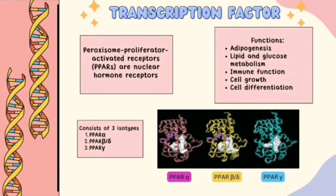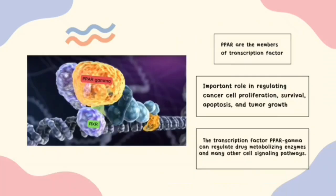Now let's move on to the transcription factors. Peroxisome proliferator activated receptors, PPARs, are the nuclear hormone receptors. The PPAR consists of three isotypes: PPAR-alpha, PPAR-beta or delta, and PPAR-gamma. But in today's discussion, we are going to focus more on PPAR-gamma. PPARs are present in the cell nuclei and they are members of the transcription factor family.